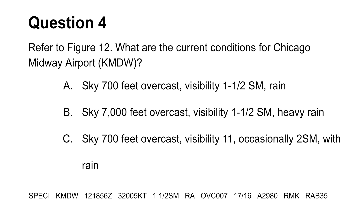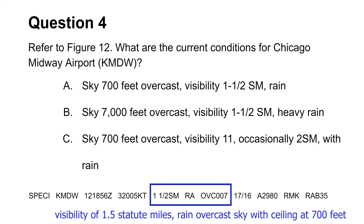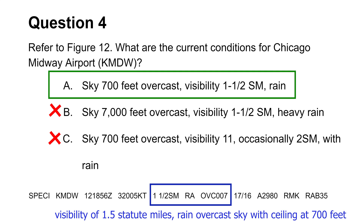The fourth question wants you to identify current conditions at a given location. Looking at the excerpt from the METAR report, we can see that the sky is indeed overcast with a ceiling at 700 feet, because the distance is shown in hundreds of feet in METAR reports. This immediately excludes choice B. We can also see that the visibility is 1.5 statute miles with rain, which excludes choice C and makes choice A the answer.